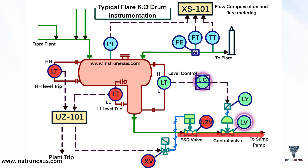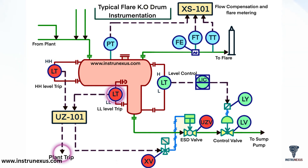Two additional level transmitters provide safety trips. The high-high level trips the plant upstream and isolates — closing the emergency shutdown valve (UZV) — in the inlet line to prevent liquid carryover into the flare header. The low-low level trip prevents pump cavitation by closing the ESD valve in the outlet line if the vessel empties too far.